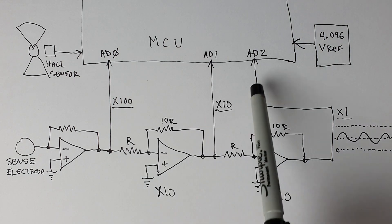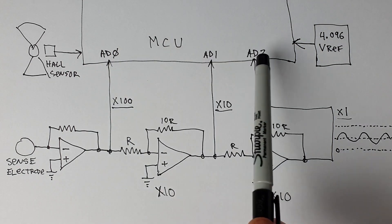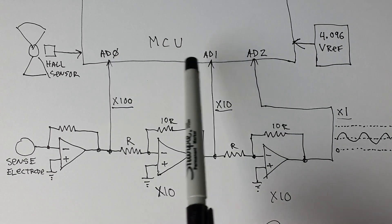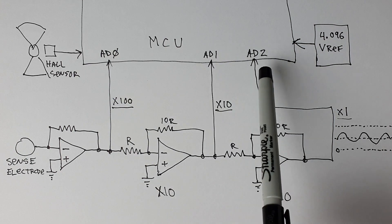So what we do then in software is we take readings from these various A to D inputs and we select the one that's most appropriate.